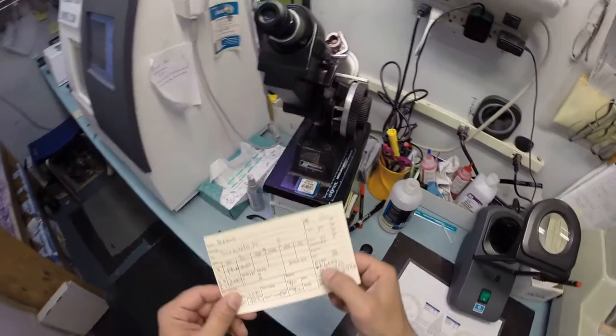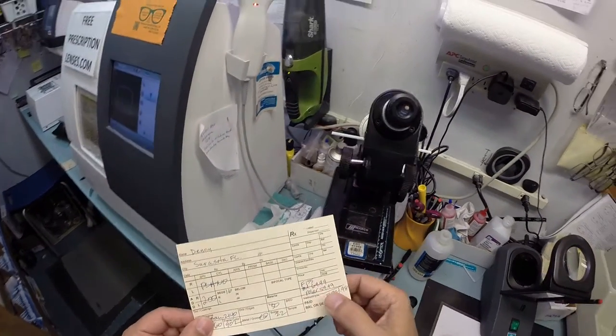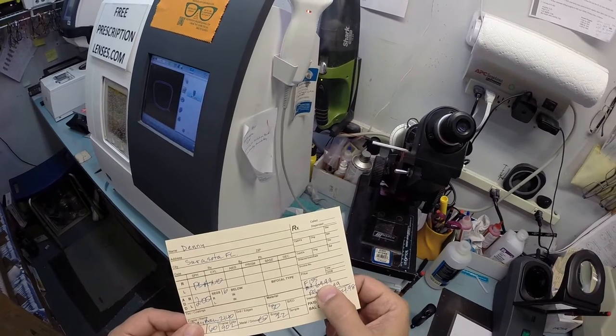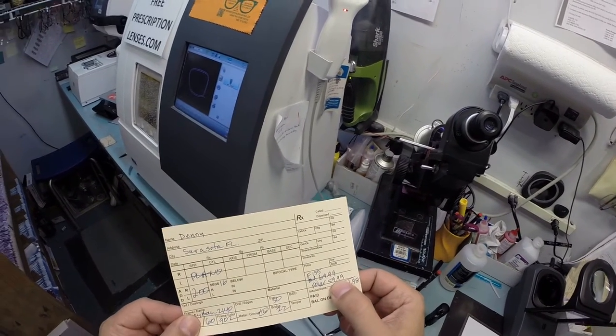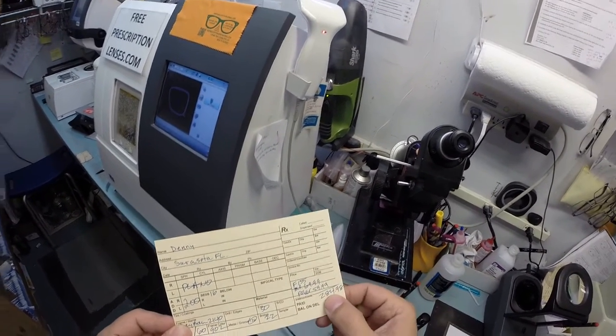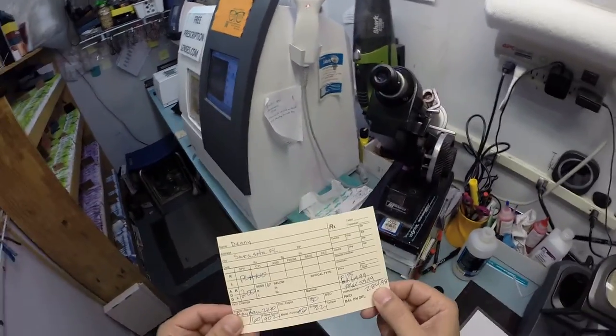Now, of course, this frame sells for $155. The line-style bifocal starts at $69.99. You added another $59.99 to make them polarized. And your total is $284.98.